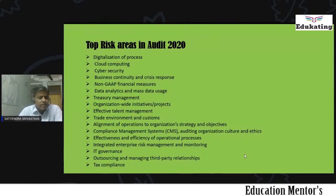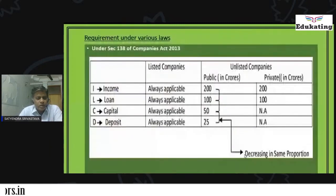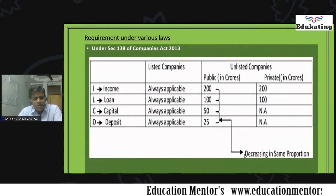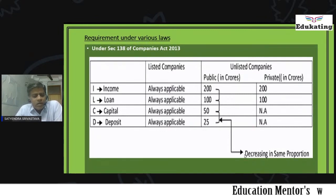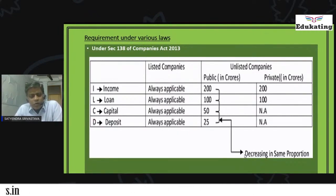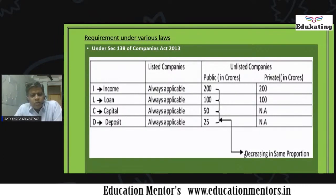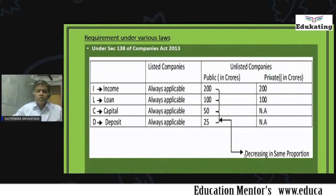These are the top risk areas which need to be checked at a deeper level in the future. These are the limits — for listed companies, Section 138 is applicable. For unlisted companies, turnover should be 200 crore. For private limited and public companies, turnover threshold is 200 crore. Loan threshold is 100 crore for public companies and 100 crore for private companies. Capital criteria is 50 crore for private companies, and deposit criteria of 25 crore for private companies does not apply.